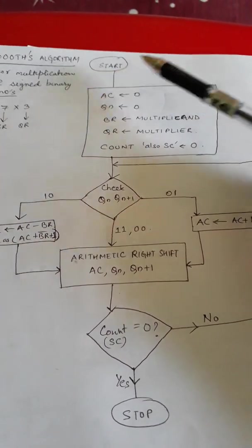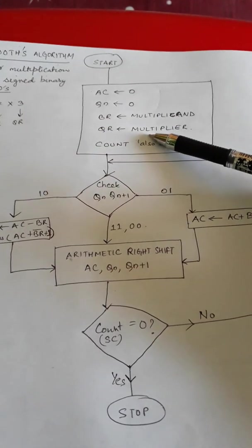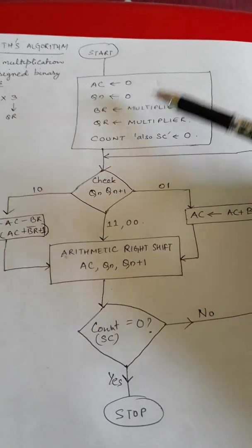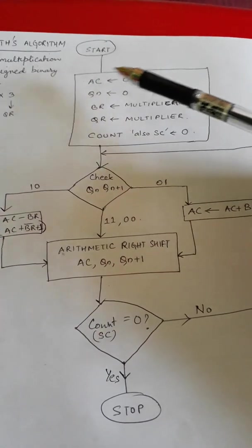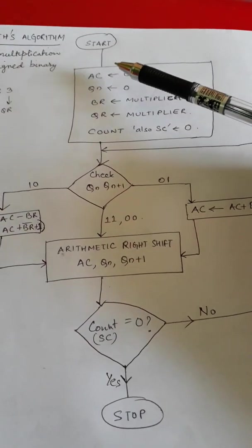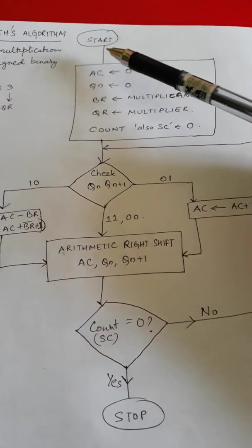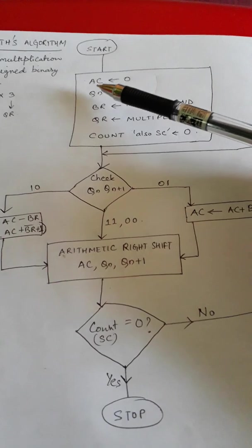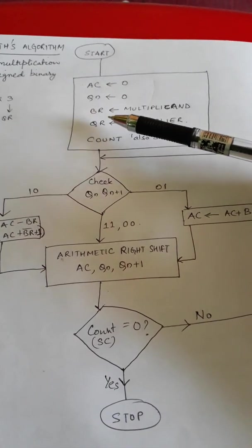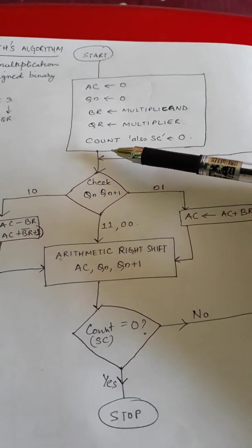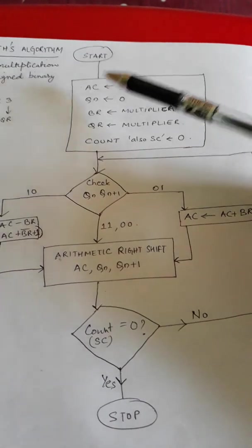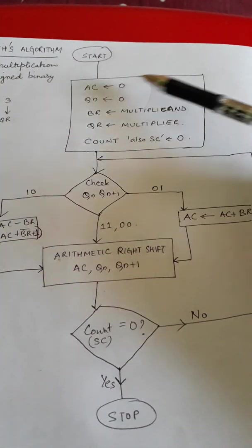Now let us begin with this flowchart. First of all we have on the top the start state and then the initialization state. Here we'll specify what are the registers or variables that we are going to utilize in the multiplication process. Altogether there are five registers: we have AC which is your accumulator, then QN, then BR, QR, and the last one is count which we also refer to as SC.